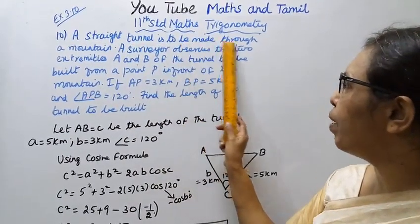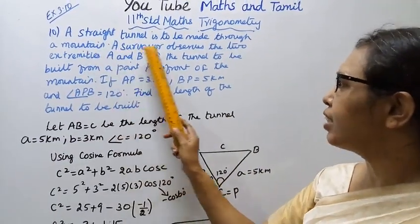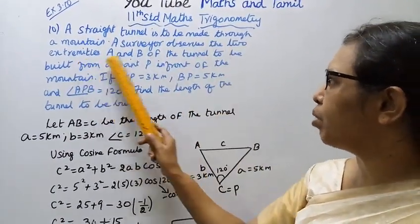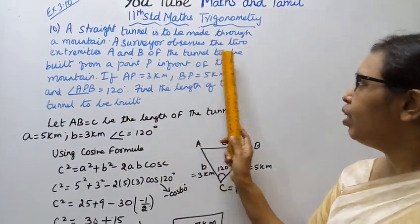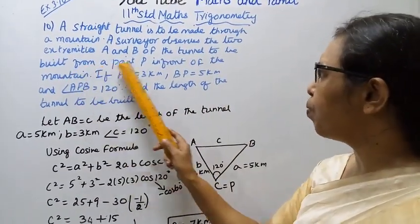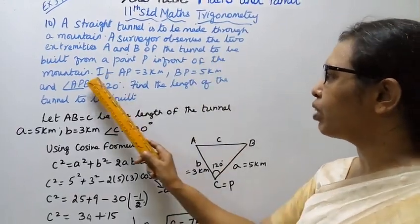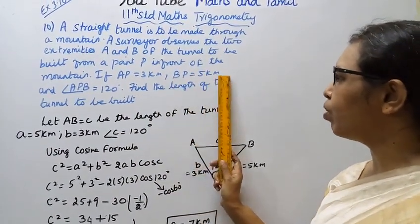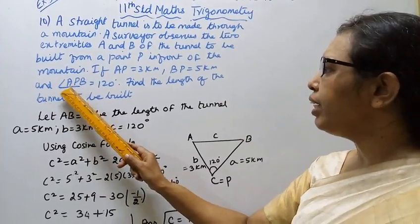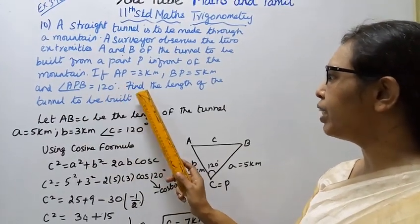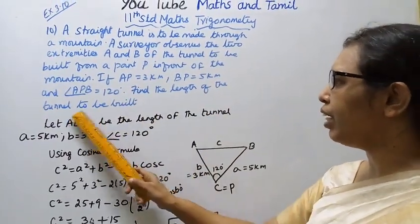A straight tunnel is to be made through a mountain where a surveyor observes the two extremities A and B of the tunnel to be built from a point P in front of the mountain. If AP equal to 3 km, BP equal to 5 km and angle APB equal to 120 degrees, find the length of the tunnel to be built.